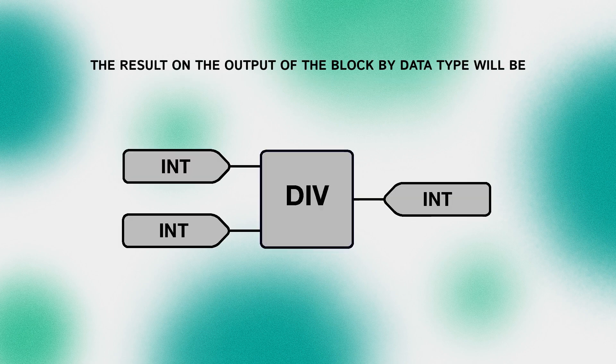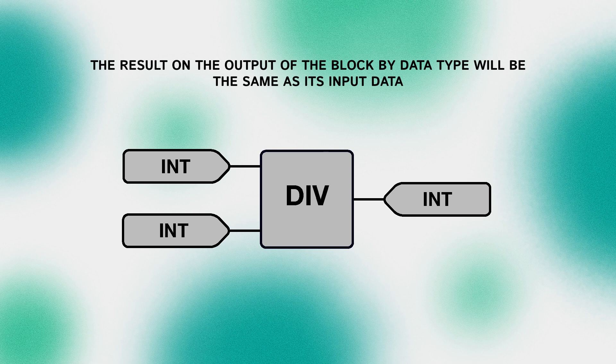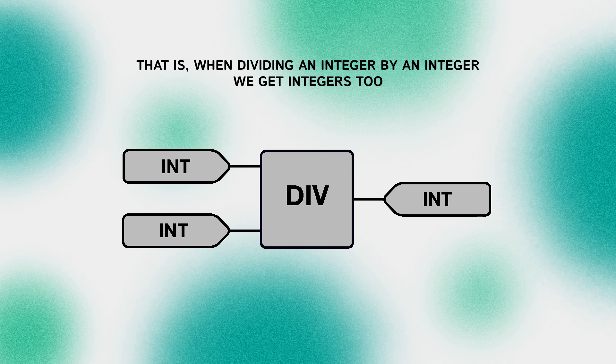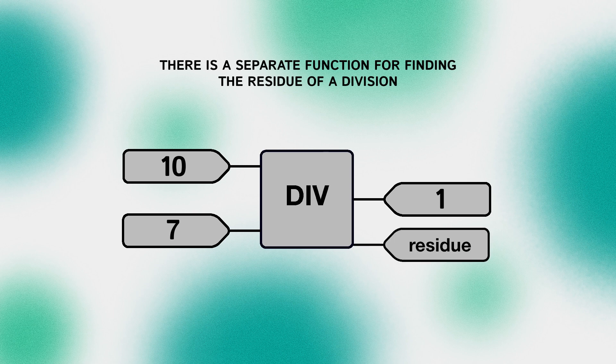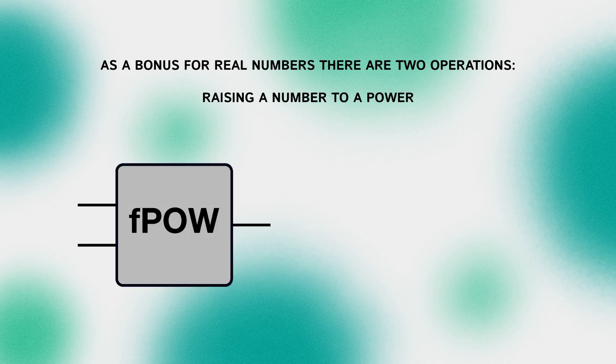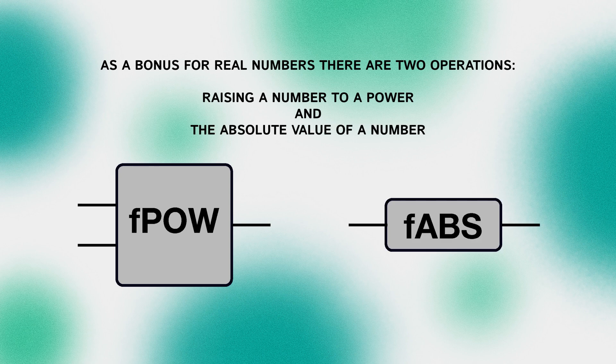The result on the output of the block by data type will be same as its input data. That is when dividing an integer by an integer we get integers too. For example, 10 divided by 9 is 1 and 10 divided by 7 is also 1. There is a separate function for finding the residue of division called mod. As a bonus for real numbers there are two operations: raising a number to a power and absolute value of a number.